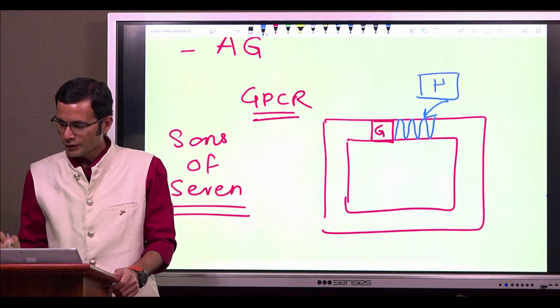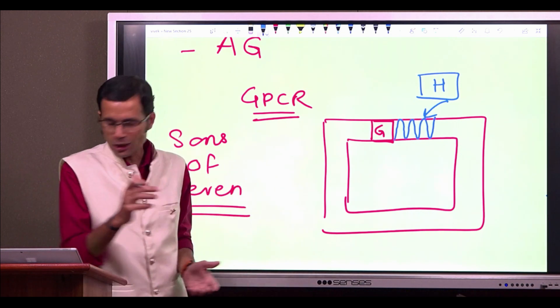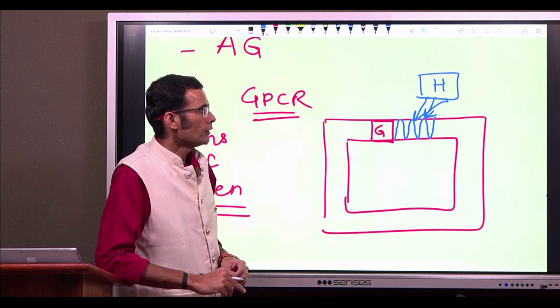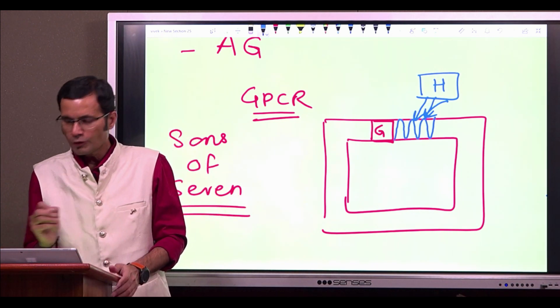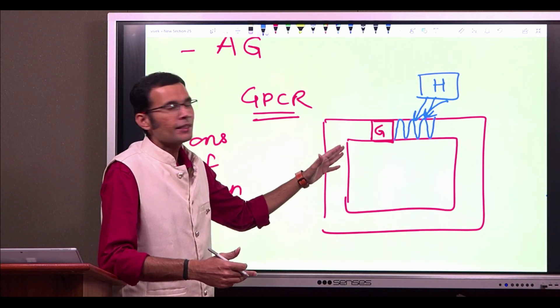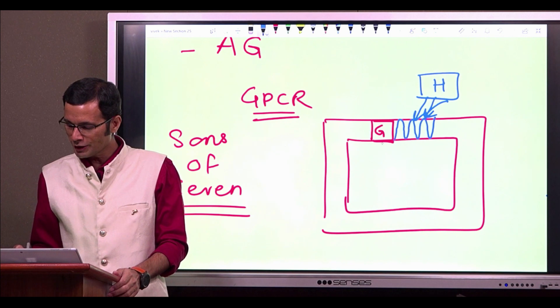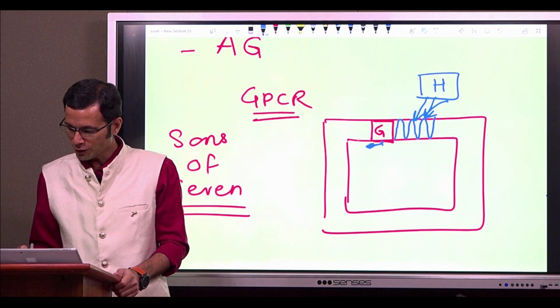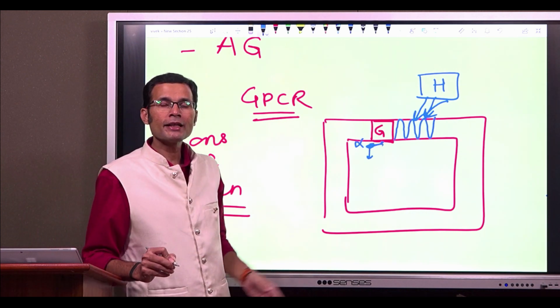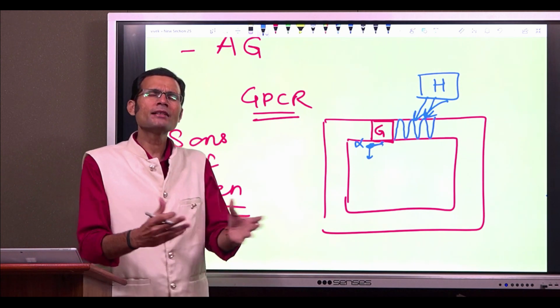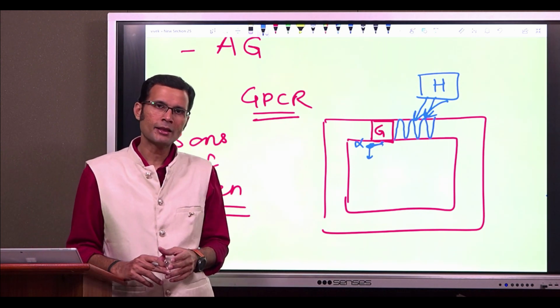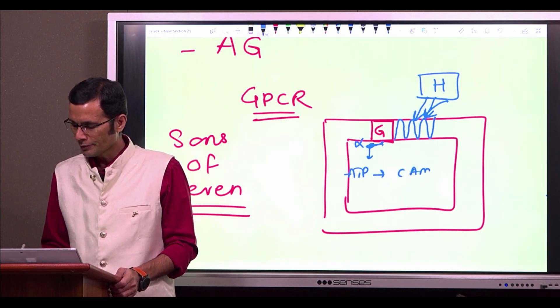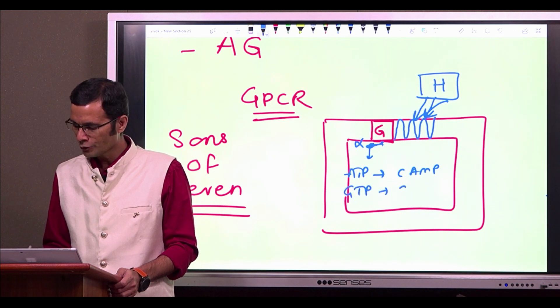So when a particular ligand or a hormone comes and combines with this receptor, it will form a few things. First thing is, the alpha subunit of this G-protein will dissociate from the beta-gamma subunits. This alpha subunit will move along the membrane and then it will activate an effector protein inside the cell, an enzyme, adenyl cyclase enzyme and that will convert the cellular ATP into cyclic AMP or GTP will be converted into cyclic GMP.